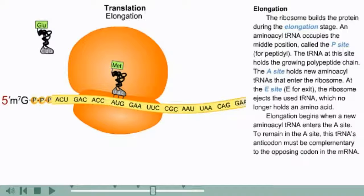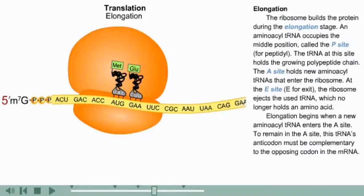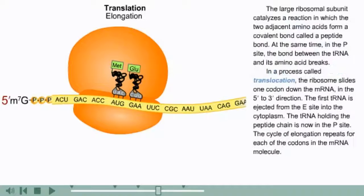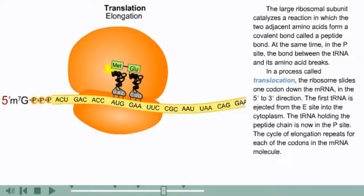Elongation begins when a new aminoacyl tRNA enters the A site. To remain in the A site, this tRNA's anticodon must be complementary to the opposing codon in the mRNA. The large ribosomal subunit catalyzes a reaction in which the two adjacent amino acids form a covalent bond called a peptide bond. At the same time, in the P site, the bond between the tRNA and its amino acid breaks.